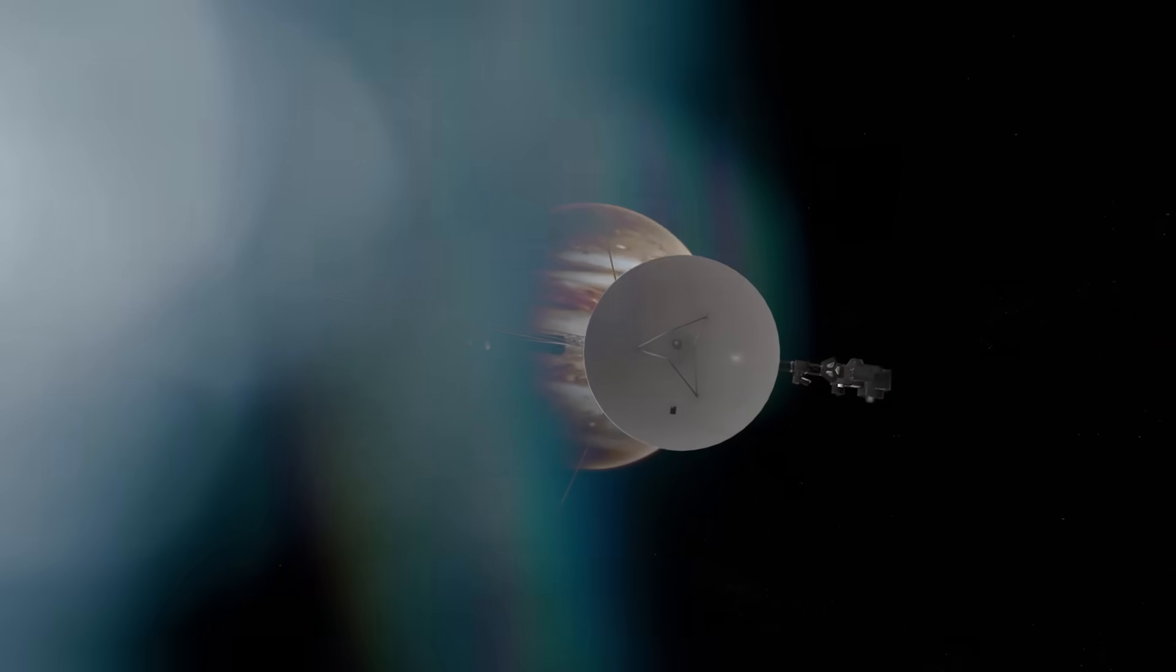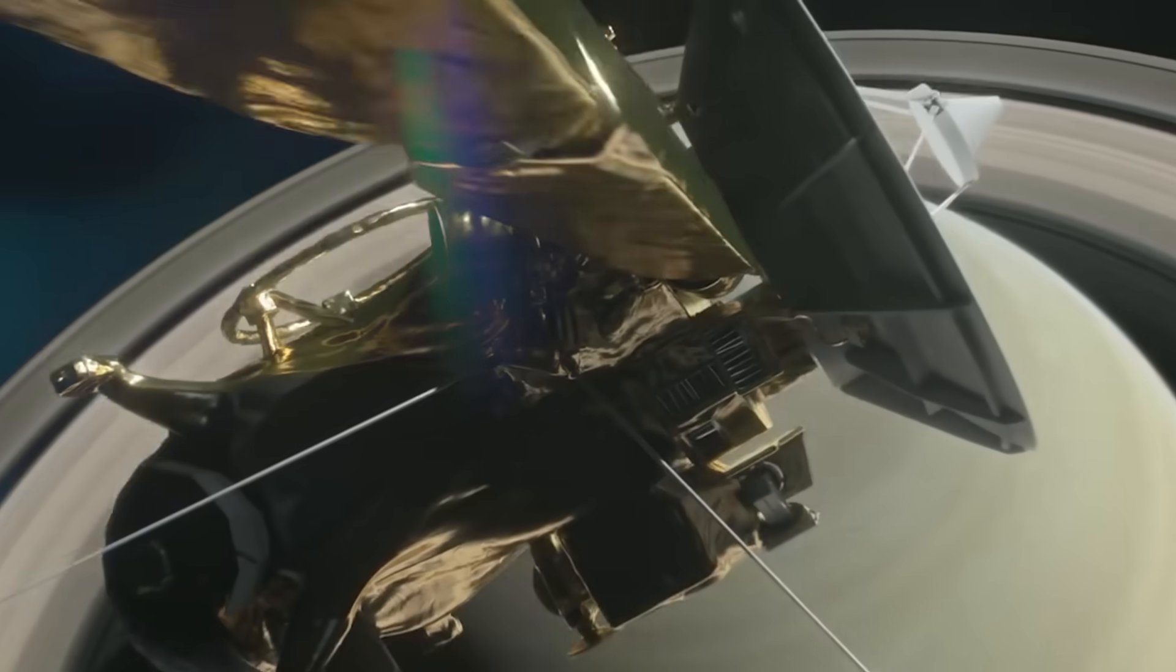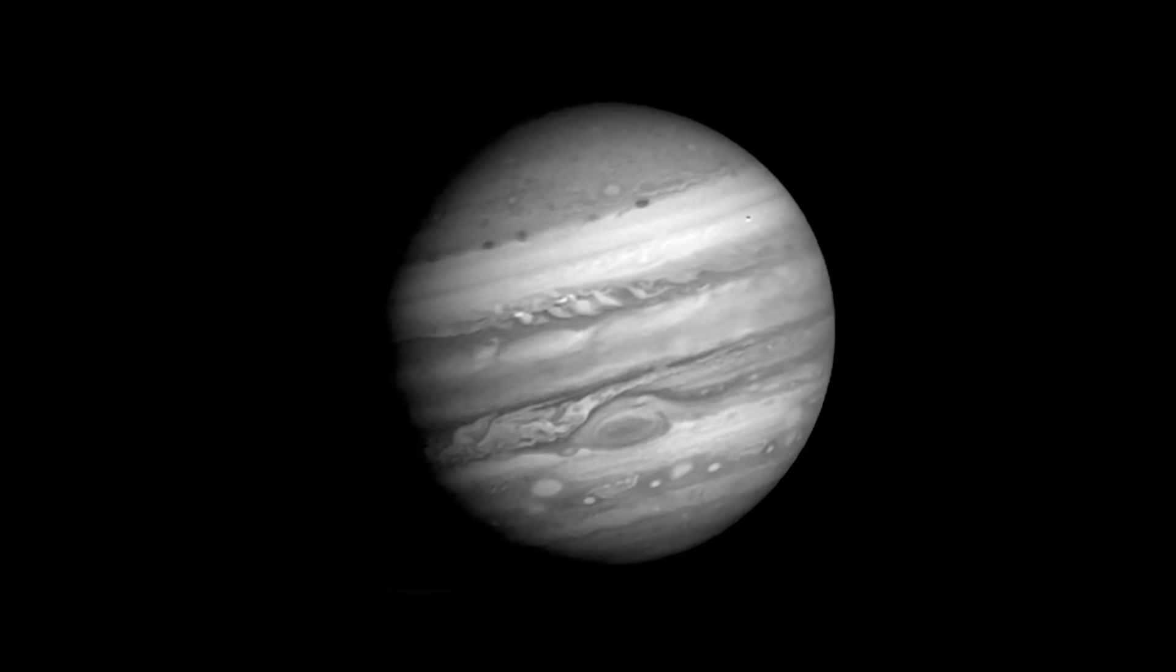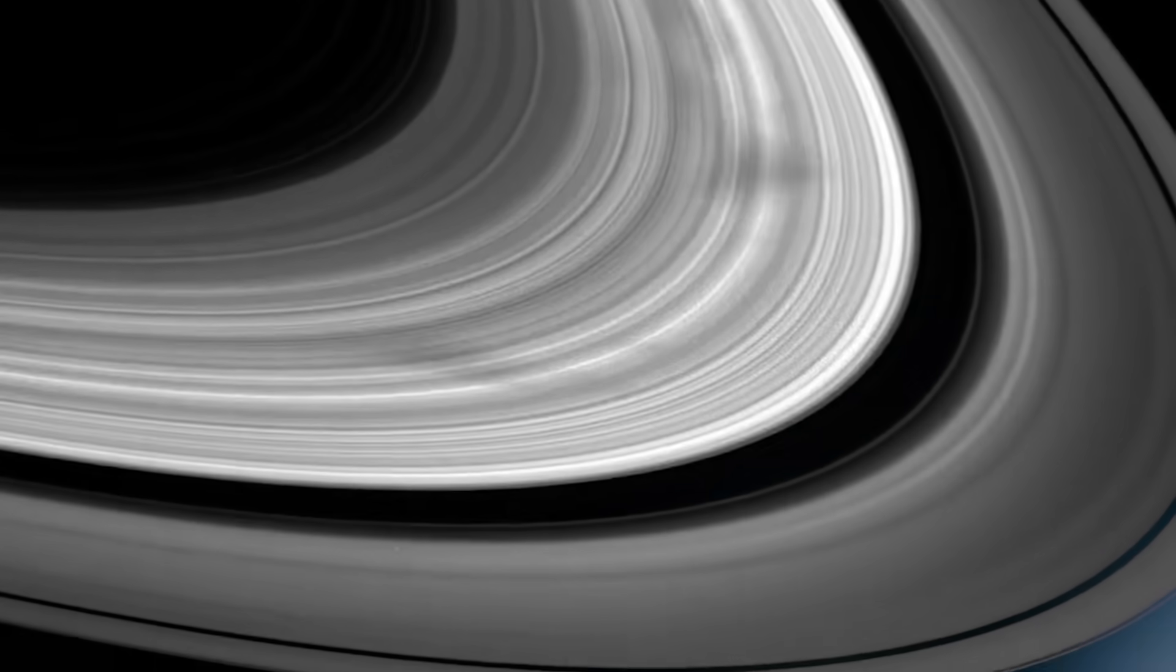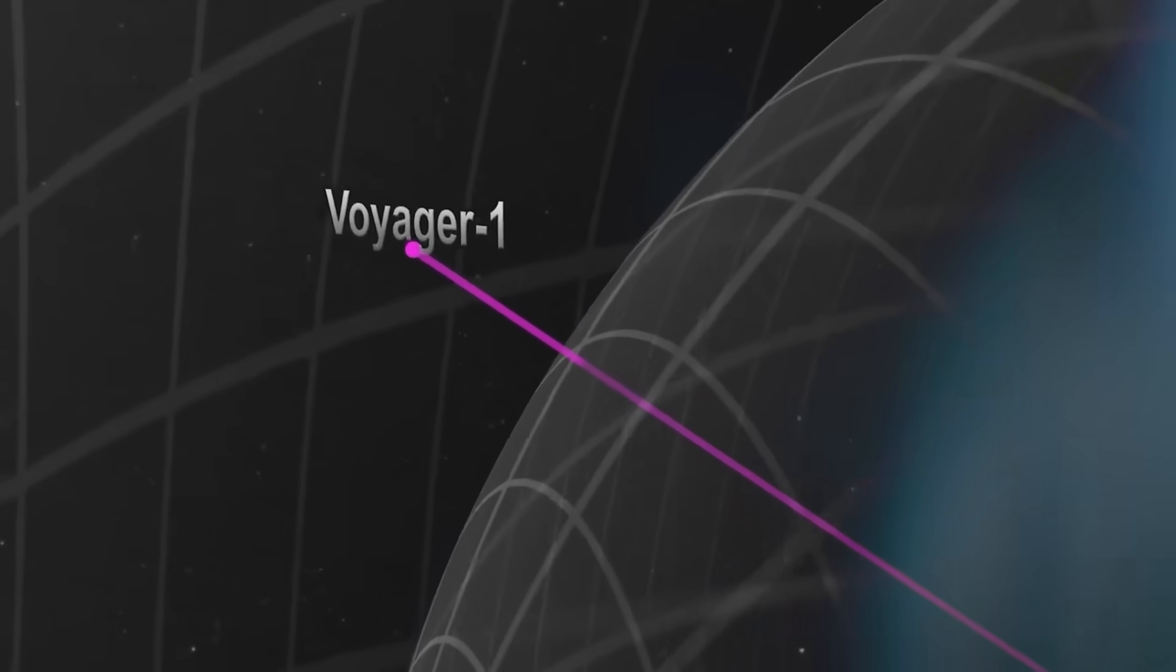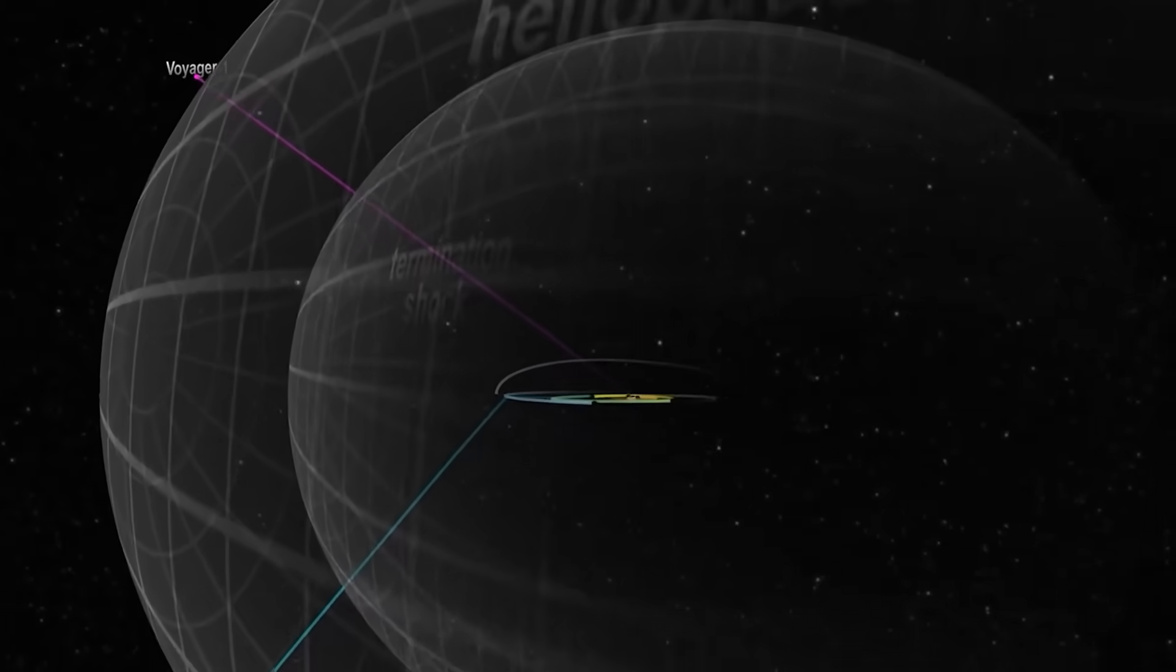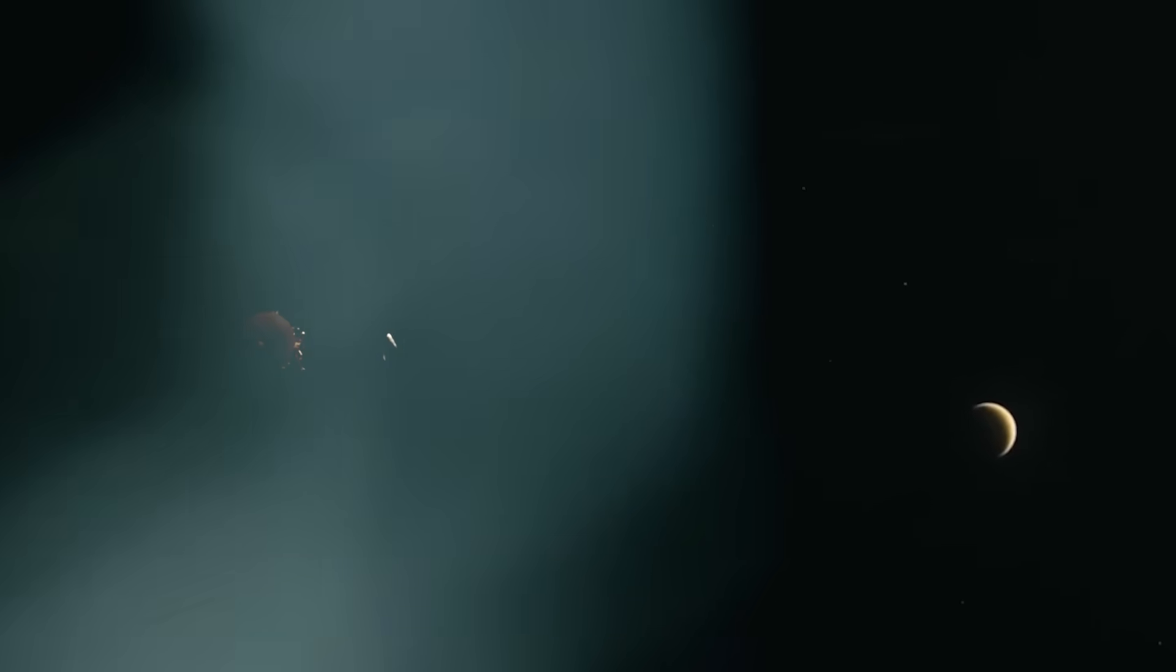And the destination? A patch of space 4.3 light-years away. Nothing known is there. No stars, no planets. Just a blank spot on our deepest maps. But Voyager is going to it. With precision. As if answering a call. When NASA sent the command to reactivate Voyager's long-dead camera system, a Hail Mary attempt to see what lay ahead, they expected silence. What they got was a response.